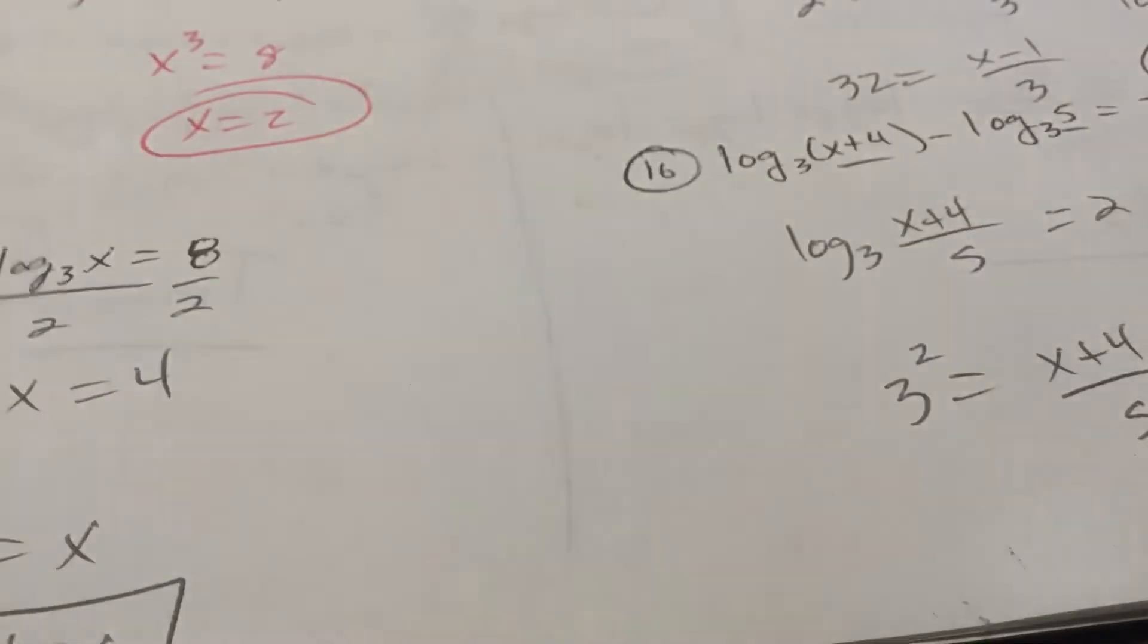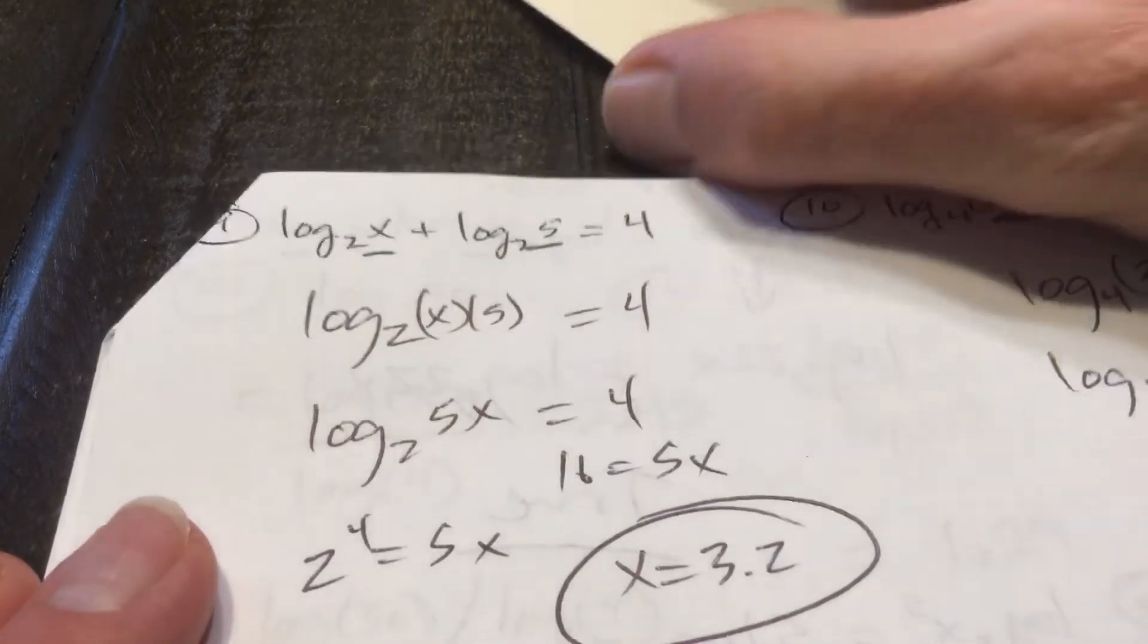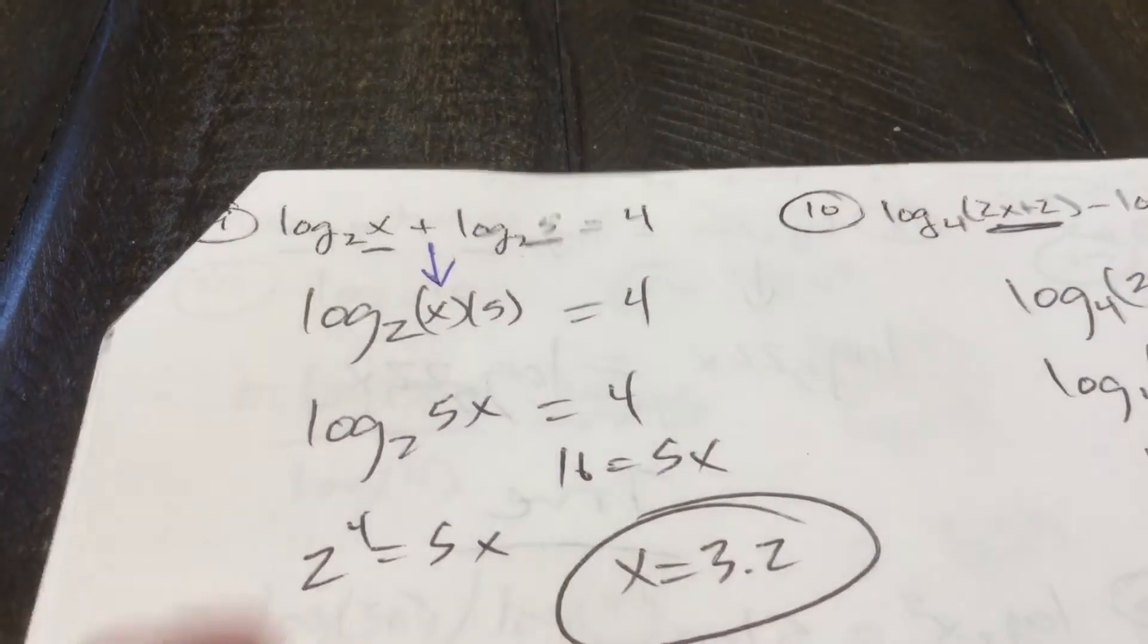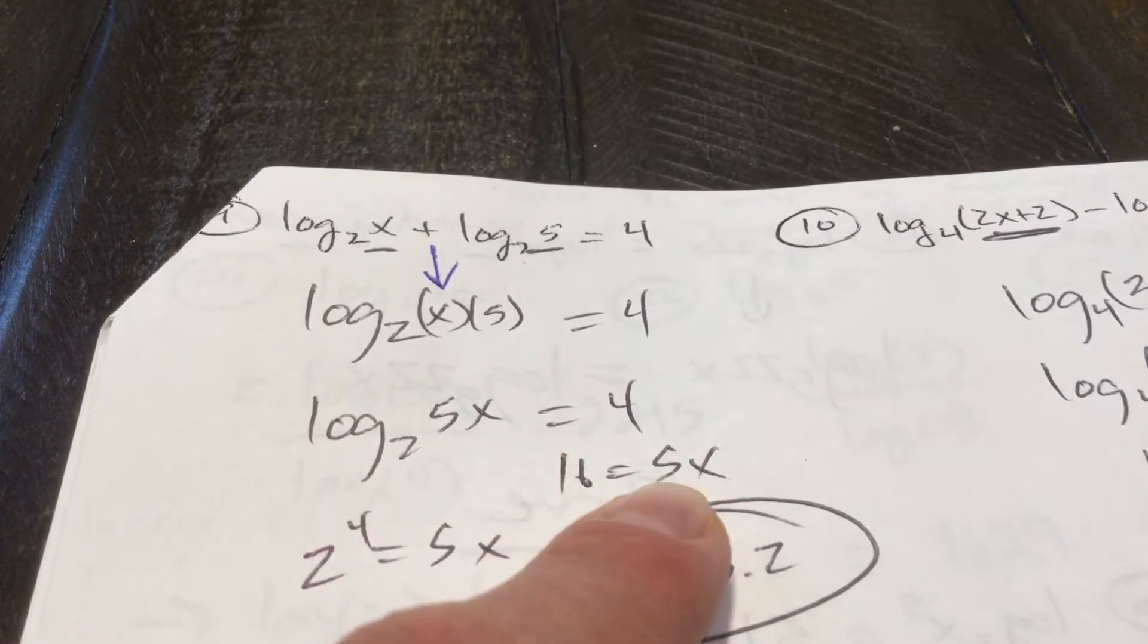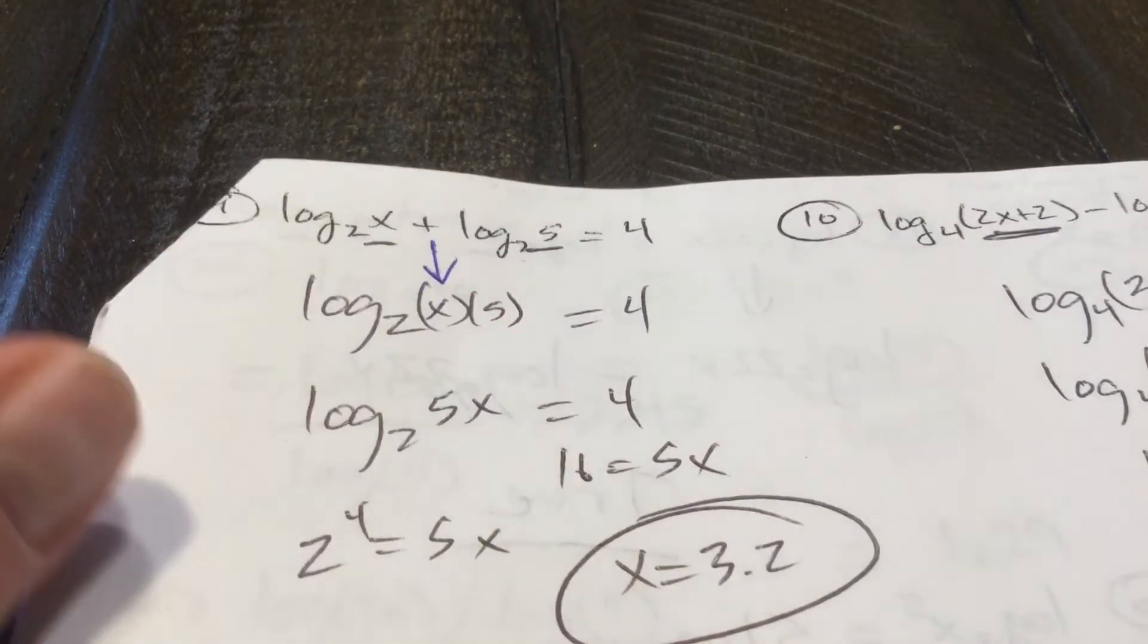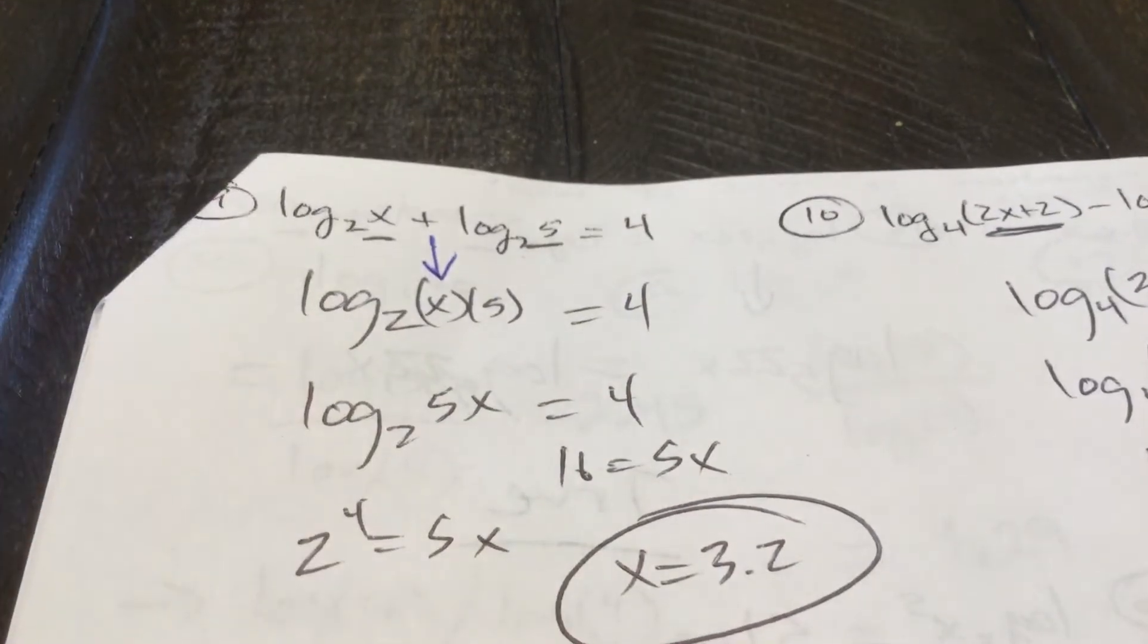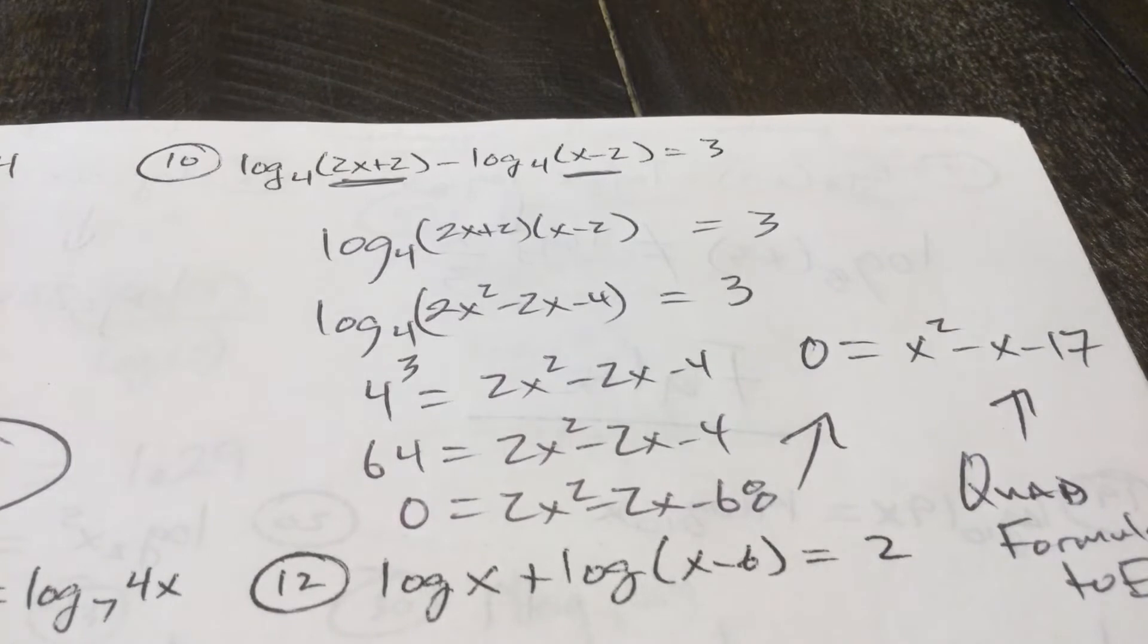All right. Log base 2 of x plus log base 2 of 5 equals 4. In the log world, addition means multiplication. That's going to be log base 2 of x times 5 or 5x equals 4. That means 2 to the 4 equals 5x. x is 3.2. That's Yogi. Somebody's probably outside. And Yogi was a rescue dog, so I'm going to blame his poor training elsewhere. Anyway, that's good. Log base 2 of a positive number is okay. Remember, you've got to check. You've got to check.